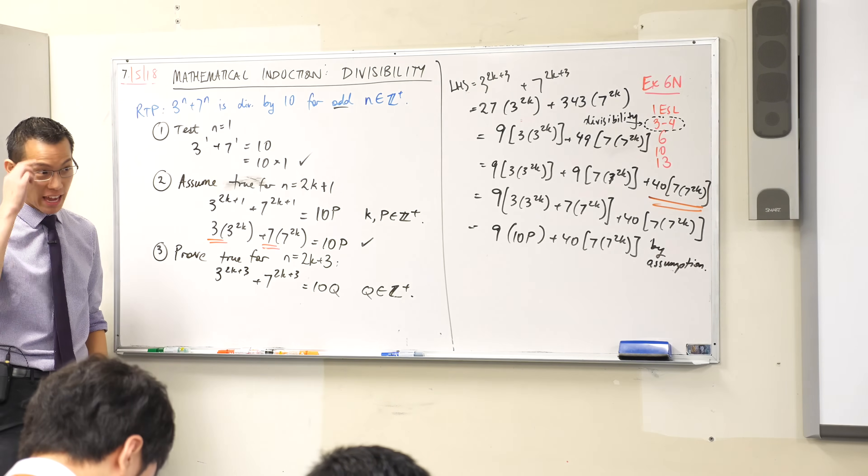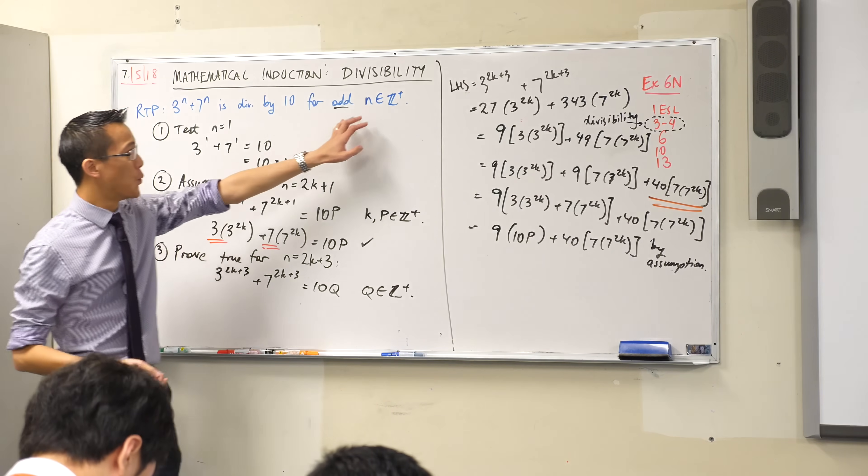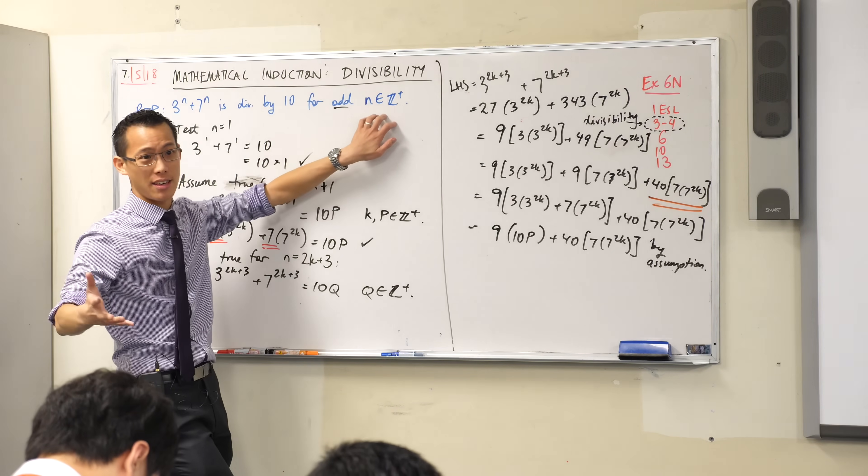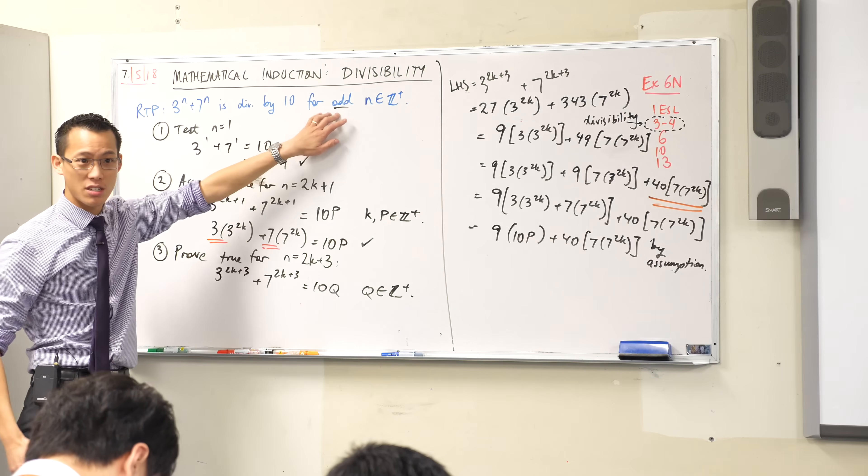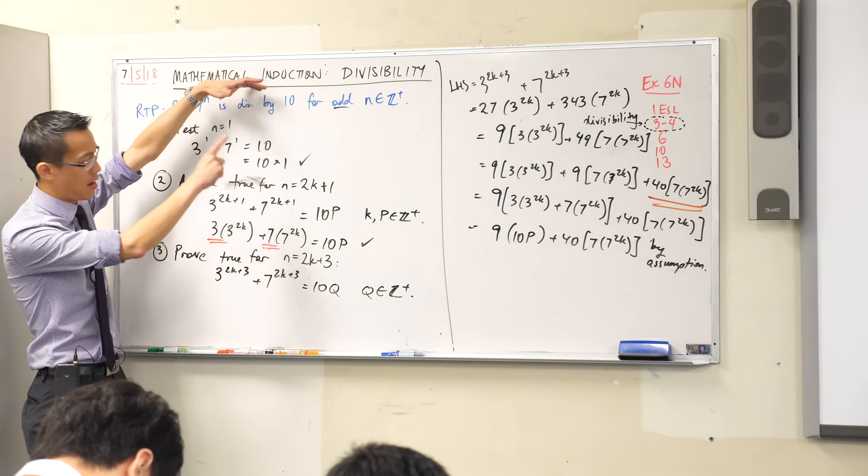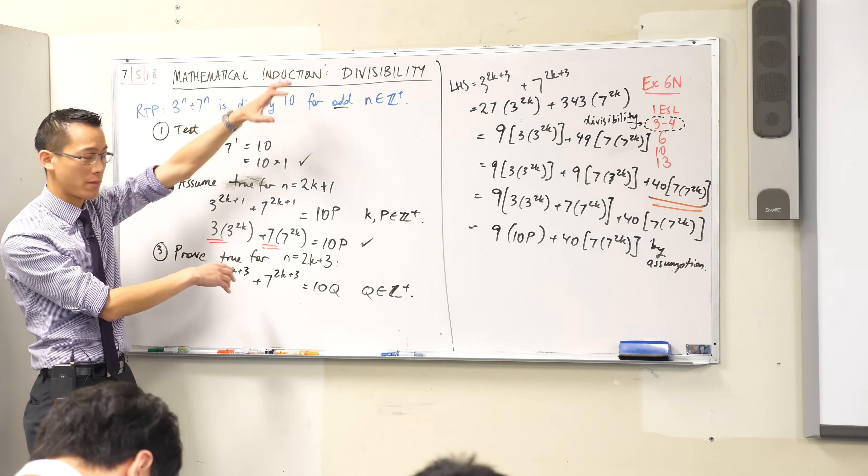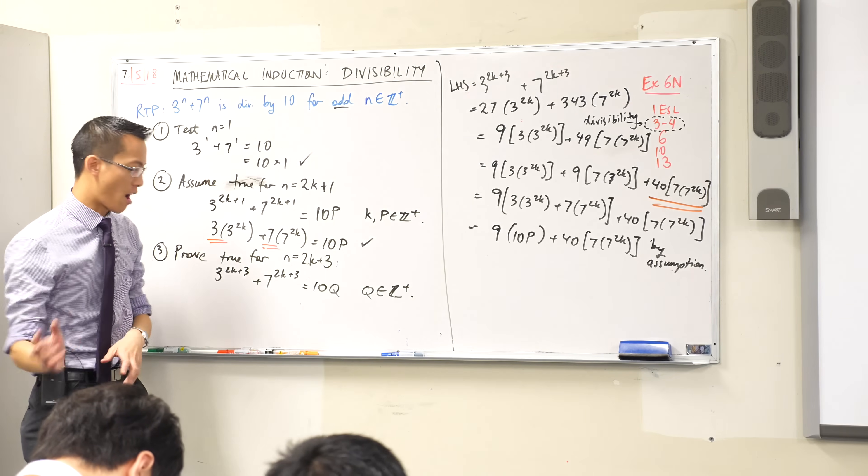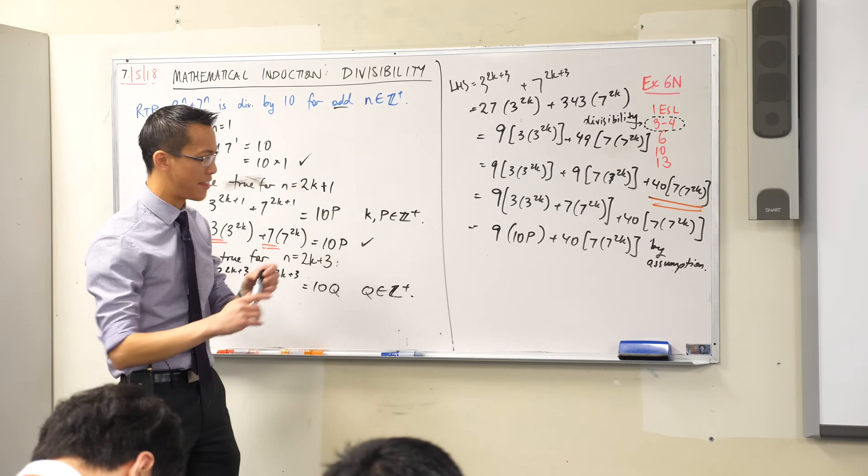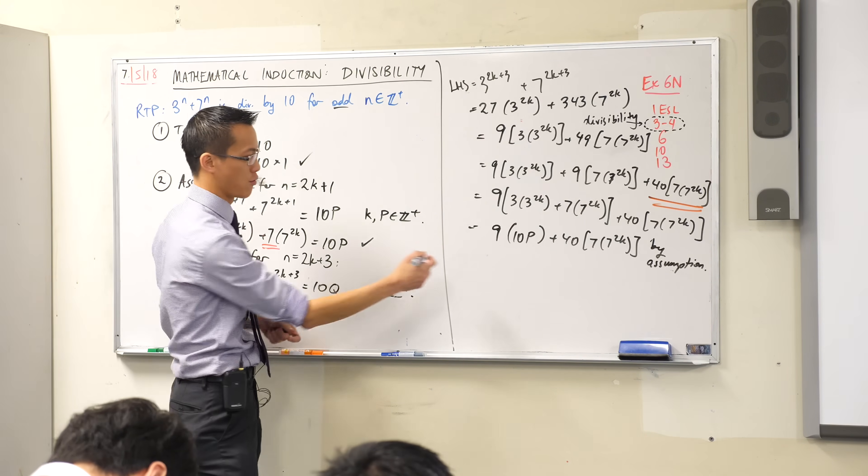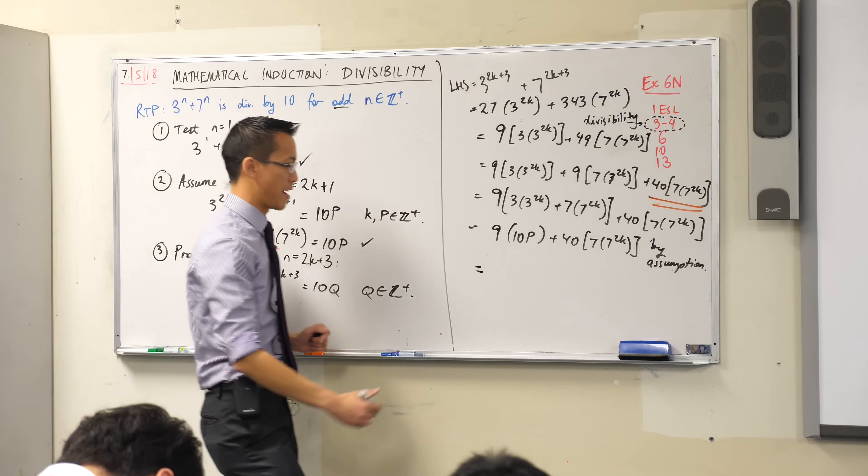So the things you need to be careful for are, what is n? n's not just anything, right? Look for the conditions around it because that will shape what you actually do in your assumption and in your proof step as well. Alright, I'll finish off writing it but I think that's all the substance so you can go back to whatever question you're on or you can write it all down with me if you like.